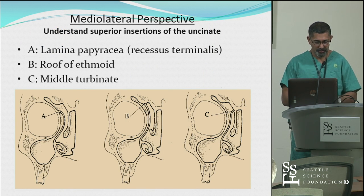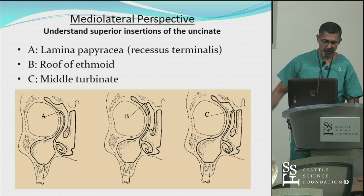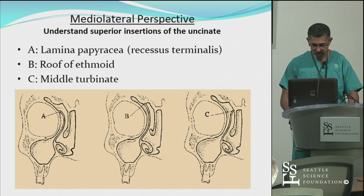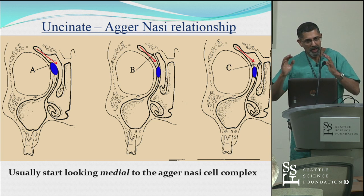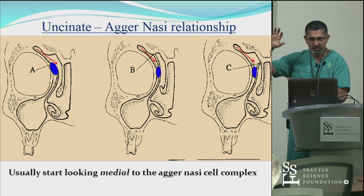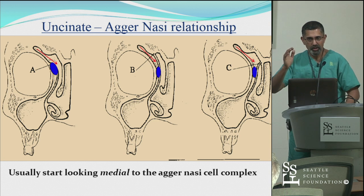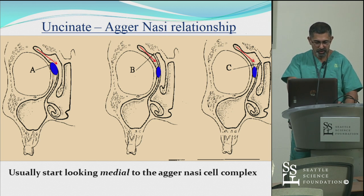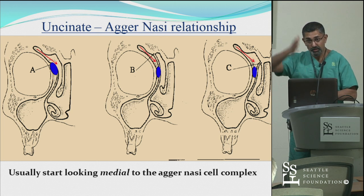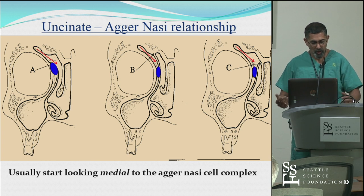The attachment types of the uncinate have come up multiple times. The A configuration is most common. Hopefully you understand a little bit more when I draw in the agar-nazi cell — the uncinate process and that agar-nazi cell complex are embryologically related entities. In fact, the superior terminus of the uncinate process becomes the medial hemisphere of the agar-nazi cell, and that's most obvious in the A-type configuration. But the actual terminus of the uncinate can attach to various points on the skull base.